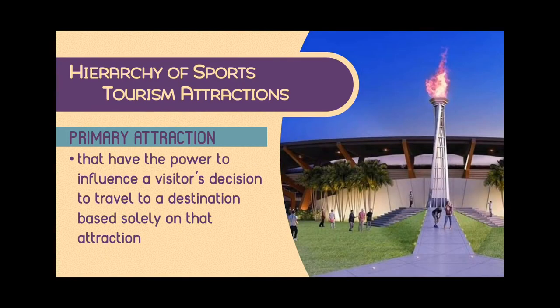There are different tiers of sports tourism attractions. The first is the primary attraction — these have the power to influence a visitor's decision to travel to a destination based solely on that attraction. For example, events like the SEA Games or World Olympics are primary sports attractions, because tourists traveling to that country most likely have the sole or main priority motivation of participating in or spectating the sports event.